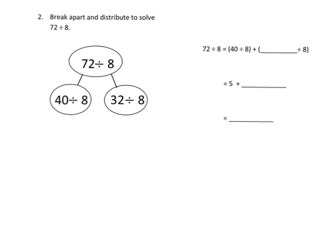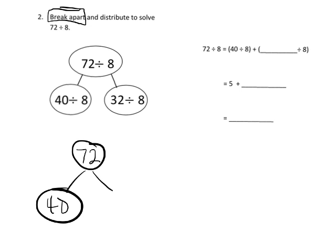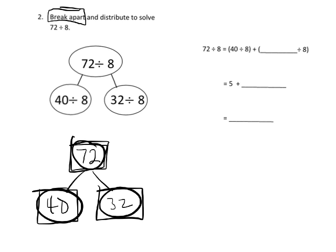Now, if you can use the distributive property in multiplication, you can use the distributive property in division as well. And so in this case, they have already done the breaking for us. They took 72 and they broke up 72 into 40 plus 32. And then, instead of dividing 72 by 8, we're going to do 40 divided by 8, and then 32 divided by 8.